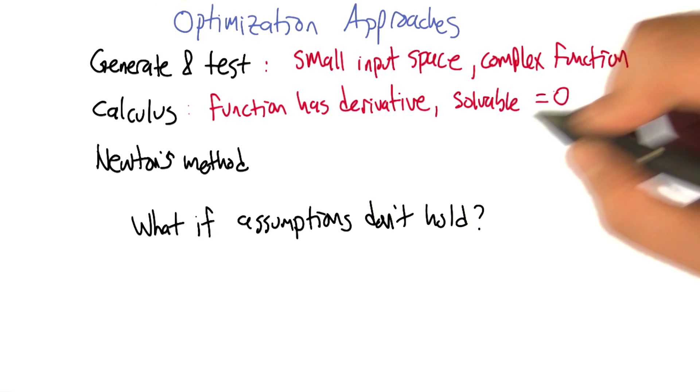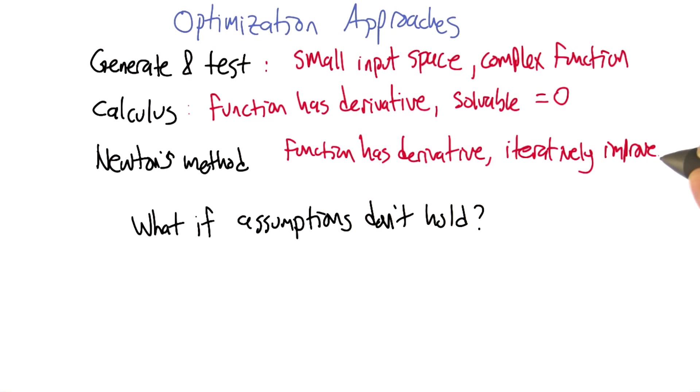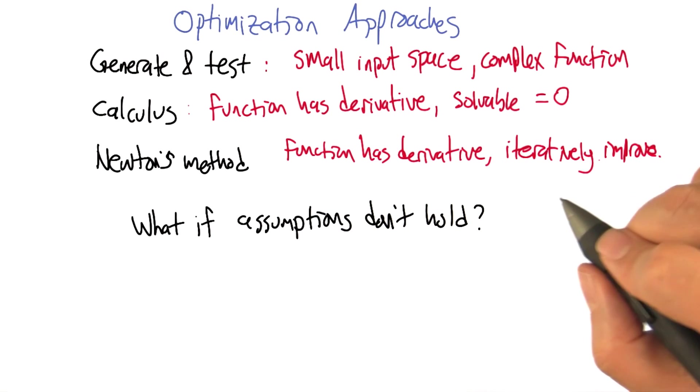Newton's method can be helpful even outside of that case, where we have a derivative and we have time to kind of iteratively improve, right? Just keep querying the function, creeping up on what the optimum turns out to be.